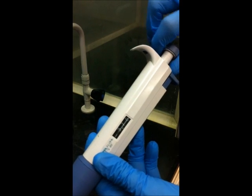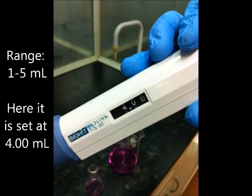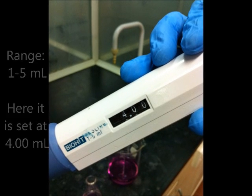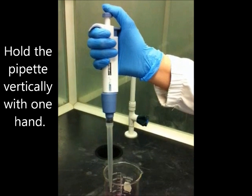The range of the micropipette shown in this photo is from 1 to 5 milliliters. Here in the picture, it is set at 4.00 milliliters. Once the volume has been adjusted,